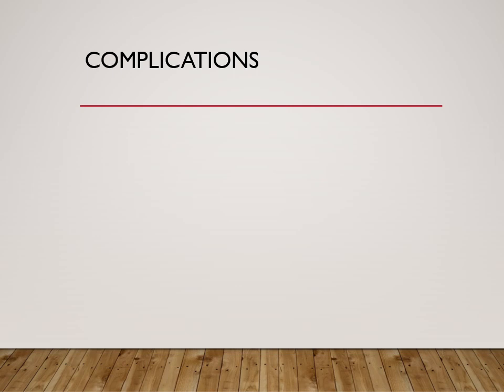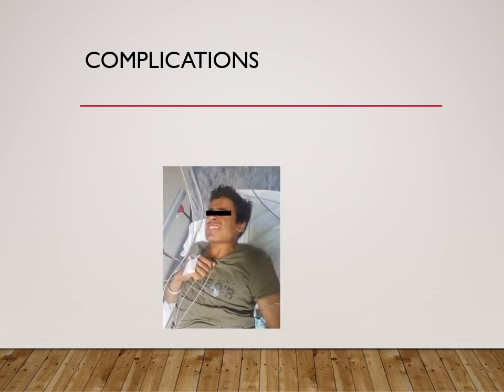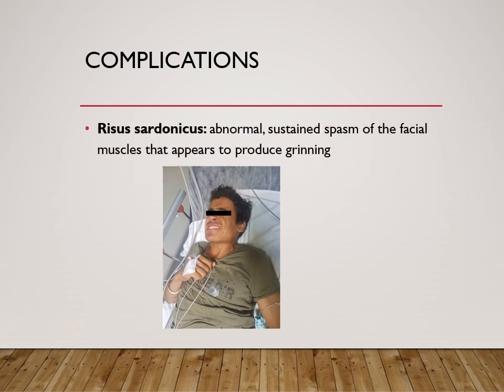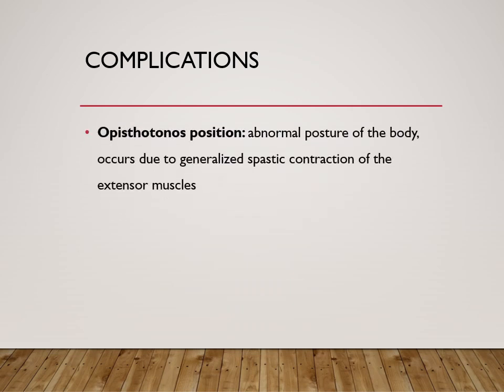What could be the complications of tetanus? One is risus sardonicus — you can see this picture where there is lockjaw and grinning of the facial muscles, with abnormal sustained spasms of the facial muscles. Another complication is opisthotonus position, where all the extensor muscles are contracted, placing the body in a posture of extension. Finally, the most serious complication is when the respiratory muscles go into spasm — the person can die.